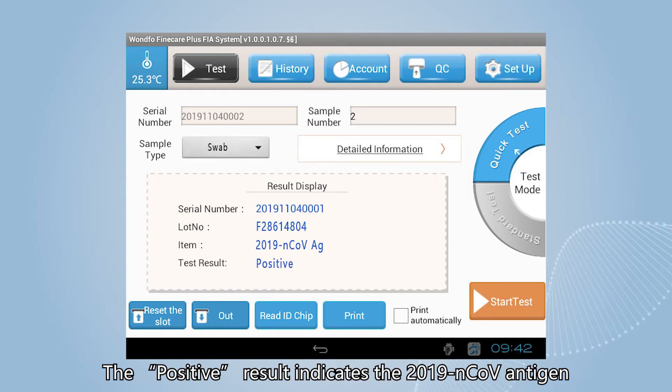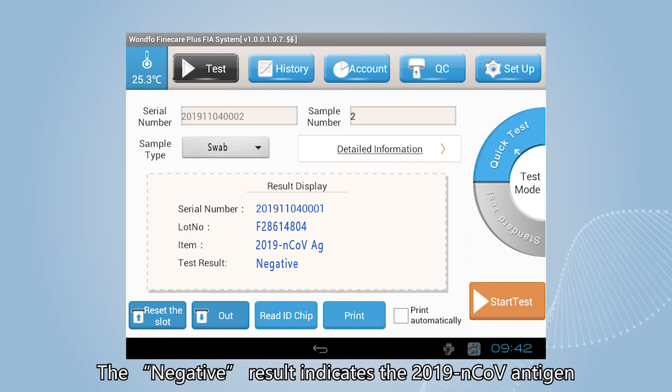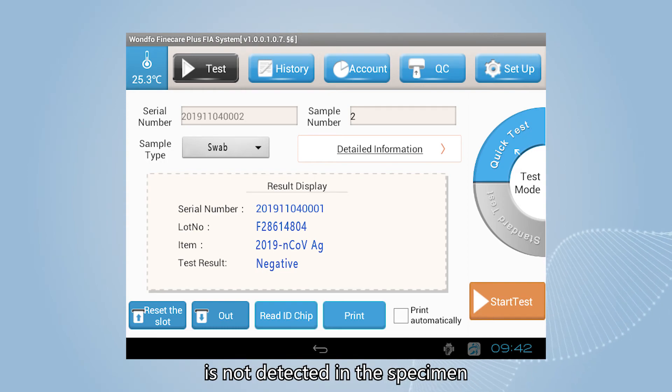The positive result indicates the 2019 novel coronavirus antigen is detected in the specimen. The negative result indicates the 2019 novel coronavirus antigen is not detected in the specimen.